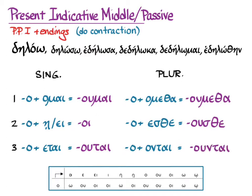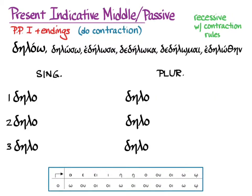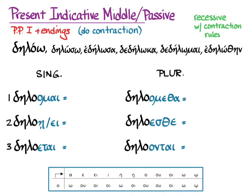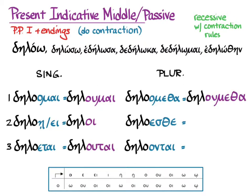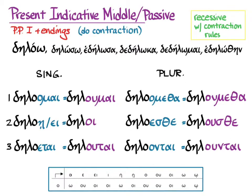Here's what that looks like with an actual verb. There are your stems, the uncontracted endings, and contracted they look like this. When we put in the recessive accent on the uncontracted forms and follow the rules for contraction and adjust the accents, here's what we get: dēloumai, dēloi, dēloutai, dēloumetha, dēlousthe, dēlountai.